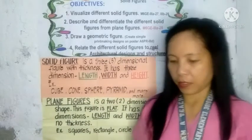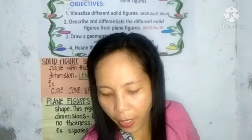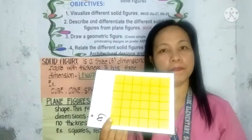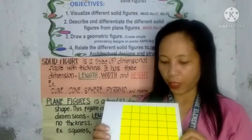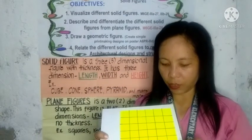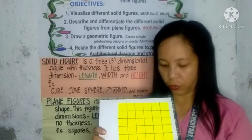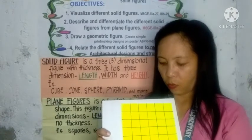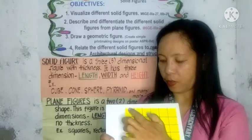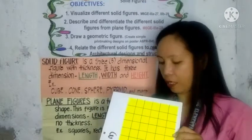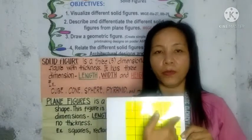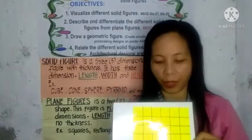Here is an example of a square. You can tell it is a square because all sides have the same measure — they are all congruent. This shape has only two dimensions: length and width.